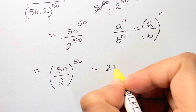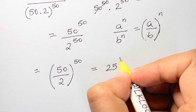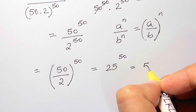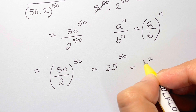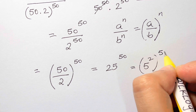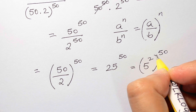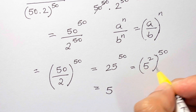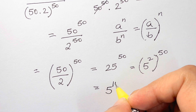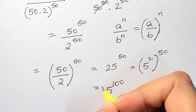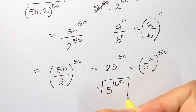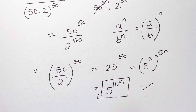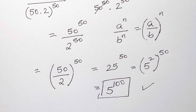Now 50 divided by 2 is 25, so we have 25 to the power of 50. And what's 25? It's 5 squared, whole to the power of 50. So that's 5 to the power of 2 times 50, which is 100 — giving us 5 to the power of 100 as your answer. That's it, thank you so much, bye bye, take care.